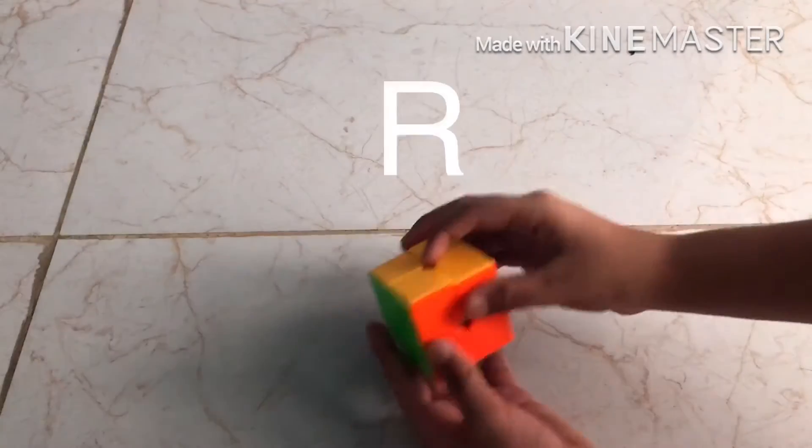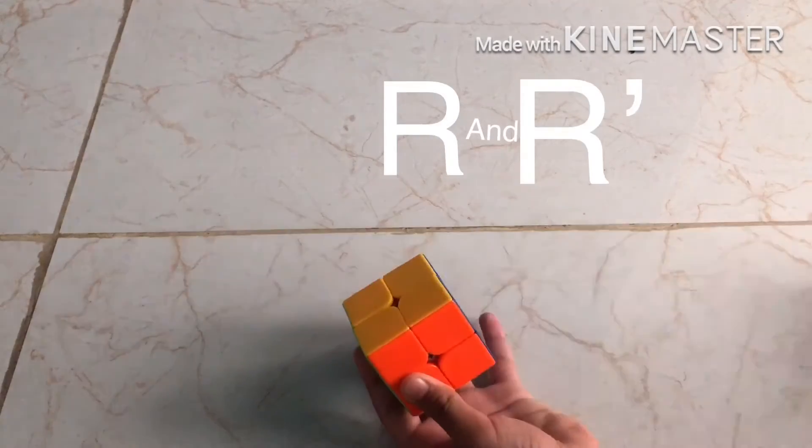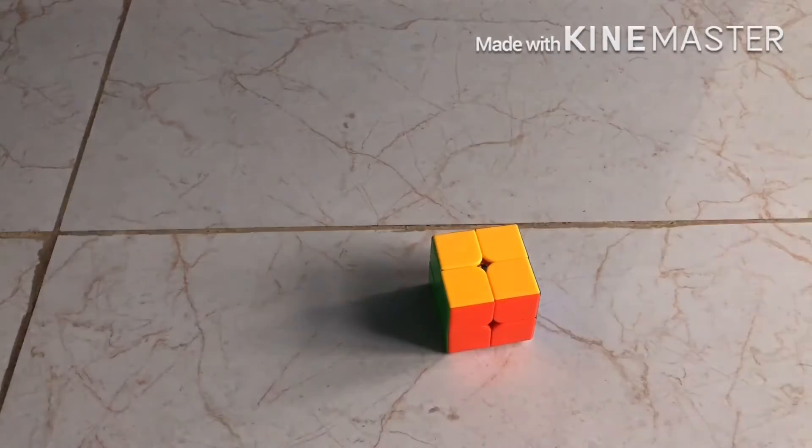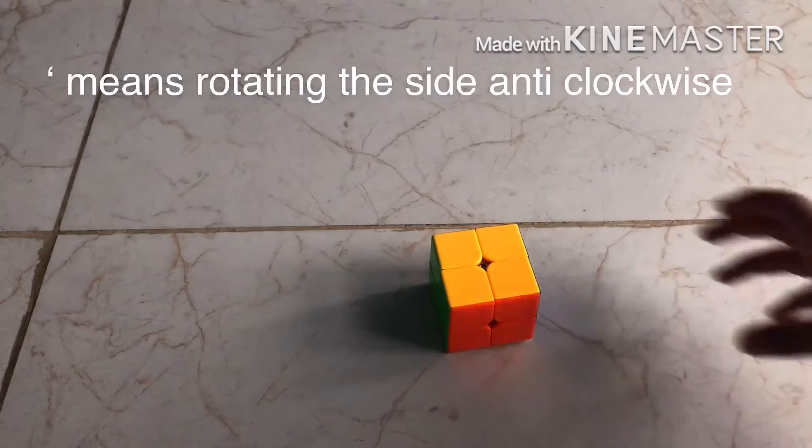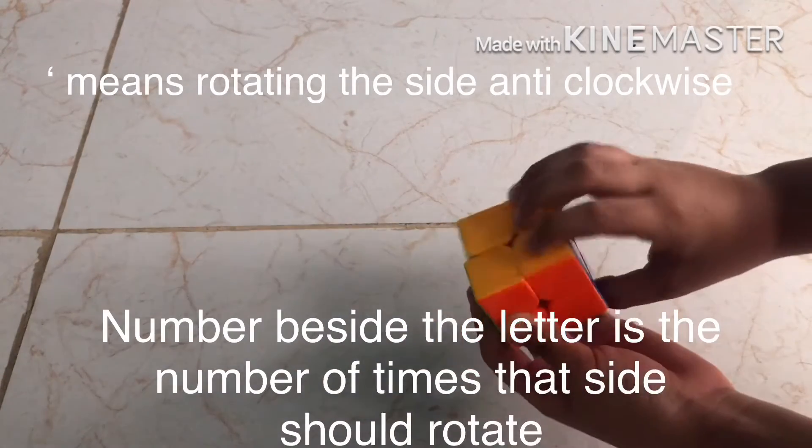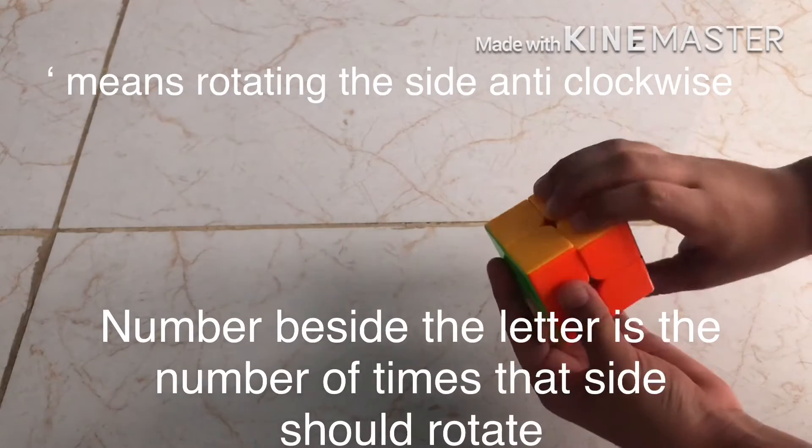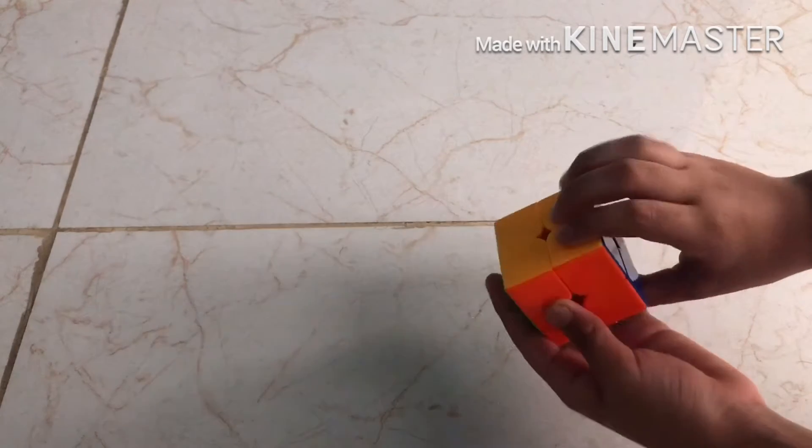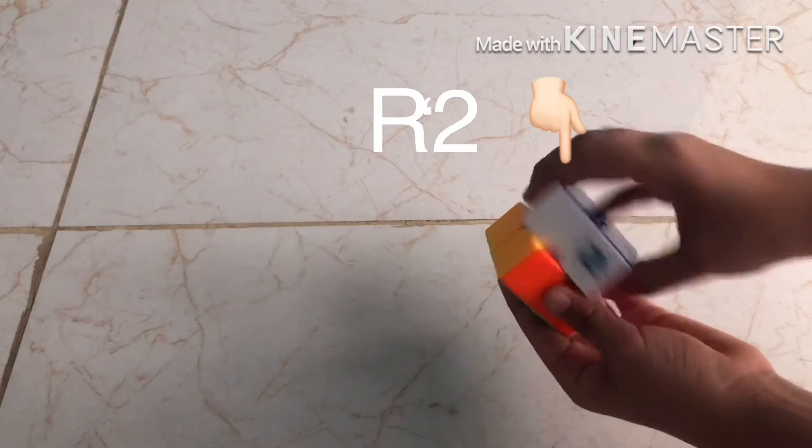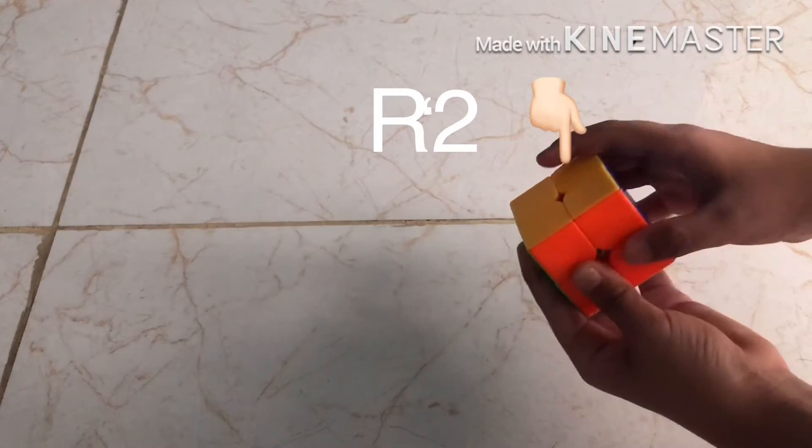This is R. This is R apostrophe. Apostrophe means rotating the side anti-clockwise and a number beside the letter stands for rotating the side that many times. For example, R2, I will rotate it two times and R apostrophe 2, two times anti-clockwise.